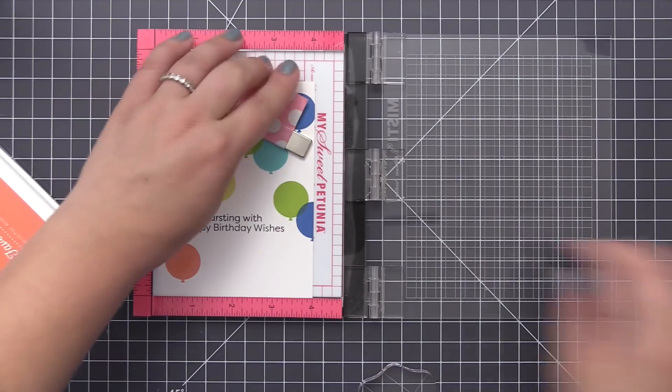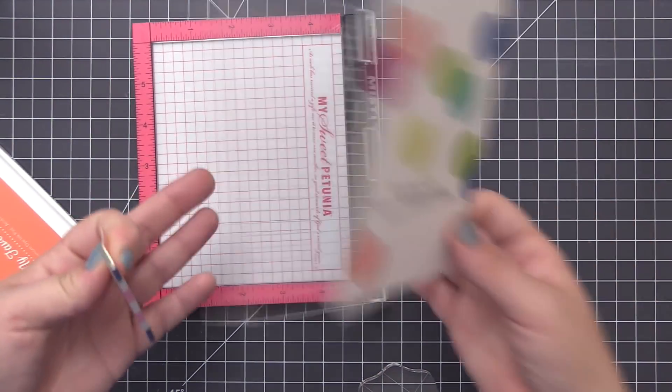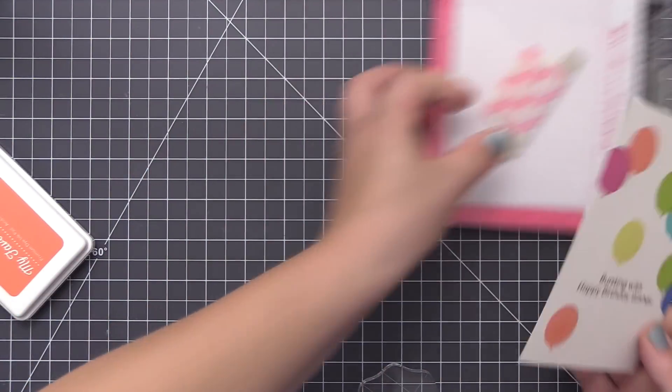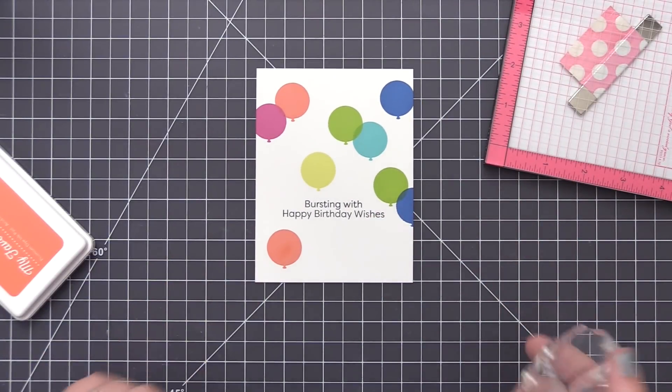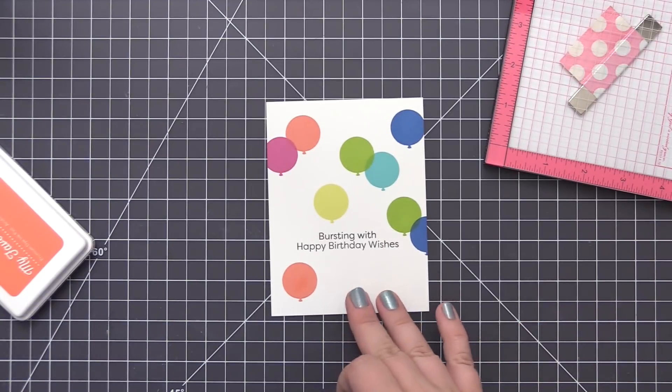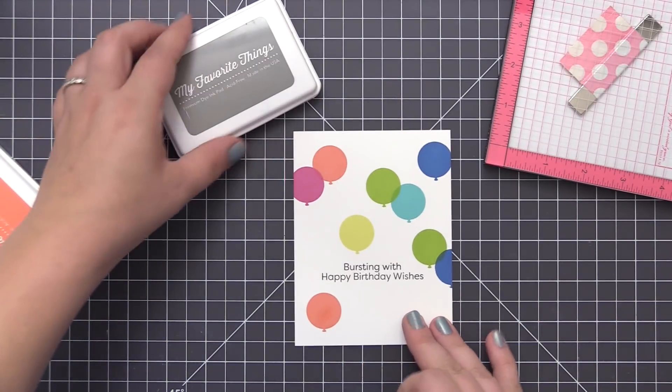For this part, I'm not going to use my MISTI. I'm just going to use an acrylic block just because it's a lot easier than kind of moving that string around that panel. This is going to allow me to line it up a little bit easier and do a little bit of masking so that I don't have any of those balloon strings stamping through my sentiment.